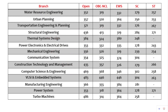Let's enter into the SVNIT Surat MTEC cut-offs. Here you can see the branches provided by SVNIT Surat: Water Resource Engineering, Urban Planning, Transportation Engineering and Planning, Structural Engineering, Thermal Systems Design, Power Electronics and Electrical Drives, Mechanical Engineering, Communication Systems, Construction Technology and Management, and Computer Science and Engineering. The CSE cut-offs are 469 for Open, 368 for OBC, 346 for EWS, 302 for SC, and 258 for ST.